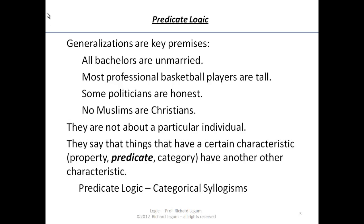Sometimes we call the kinds of arguments we've looked at categorical syllogisms — they talk about categories. 'All bachelors are unmarried' talks about the category of bachelors and the category of unmarried. 'Most professional basketball players are tall' — most people in that category are tall. 'Some politicians are honest' — at least a few of the people in the politicians category are in the category of being honest. And 'no Muslims are Christians' — nobody in the category of being Muslim is in the category of being Christian.